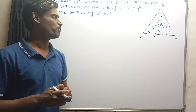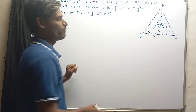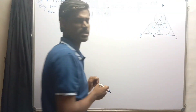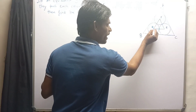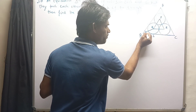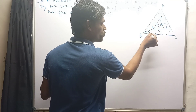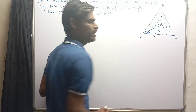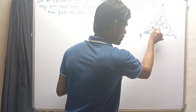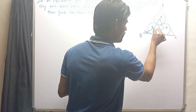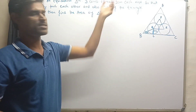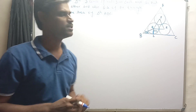We know that in any equilateral triangle, each angle measures 60 degrees. Let's draw BQ, which is the angle bisector of angle B, so the value of angle QBL is now 30 degrees. Also, let's draw a radius QL of 1 centimeter — it is given that each circle has a radius of 1 centimeter and is kept inside this triangle.